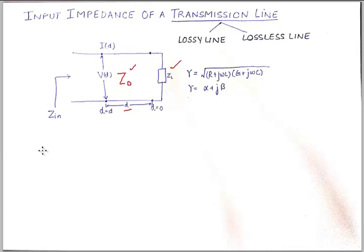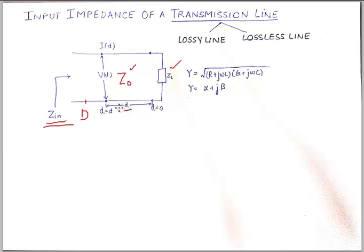Zin is something which needs to be calculated, and this distance D plays an important role, because at every point on the transmission line the input impedance will change. At a greater distance (capital D), the input impedance will differ from that at the smaller distance d, and so on. This depends upon the standing wave ratio and the distance, because the distance causes a certain amount of phase shift in the signal.